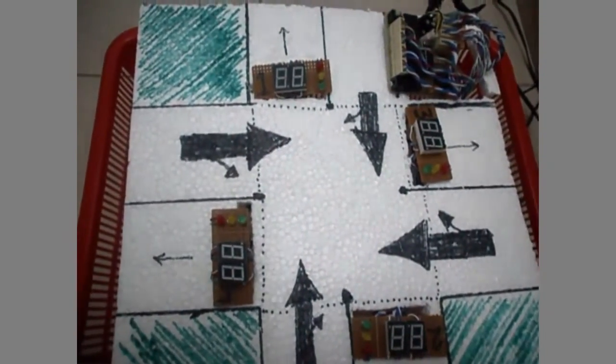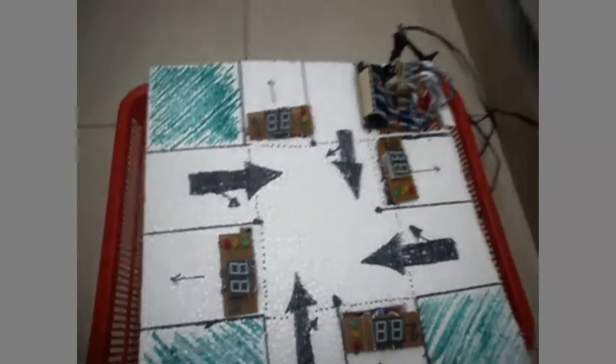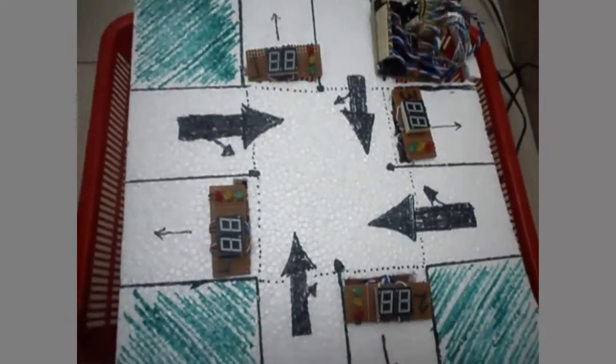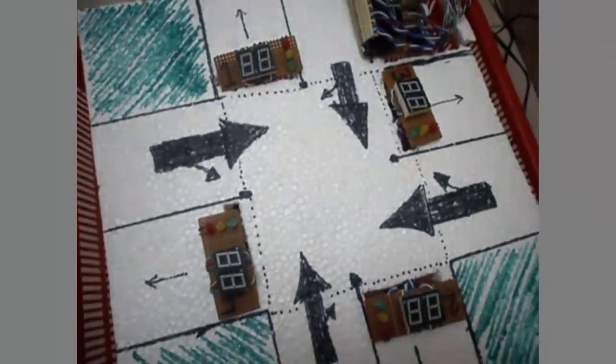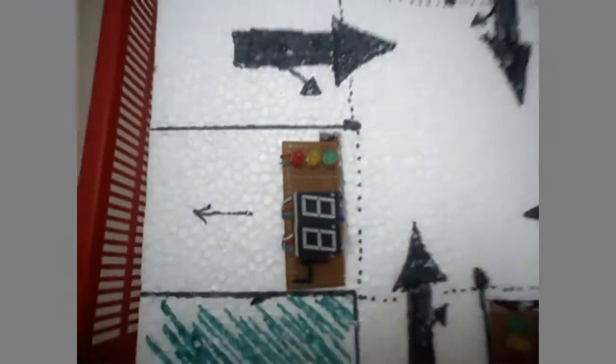The system has 4 traffic lights as it is a 4-way junction, and each traffic light has 3 low power LEDs: the red, yellow, and green.